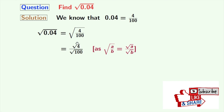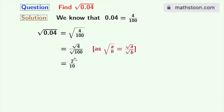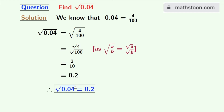So from this we get 2 by 10. Writing this fraction as a decimal number we get 0.2. So finally, square root of 0.04 is equal to 0.2, and this is our final answer.